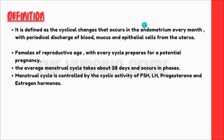There are three layers in the uterus: Endometrium, Myometrium, and Perimetrium. In these three layers, the innermost layer is shed every month. With the endometrium, there is some discharge of blood, mucus, and epithelial cells through the vagina. When this innermost layer is shed, we call it the menstrual cycle.